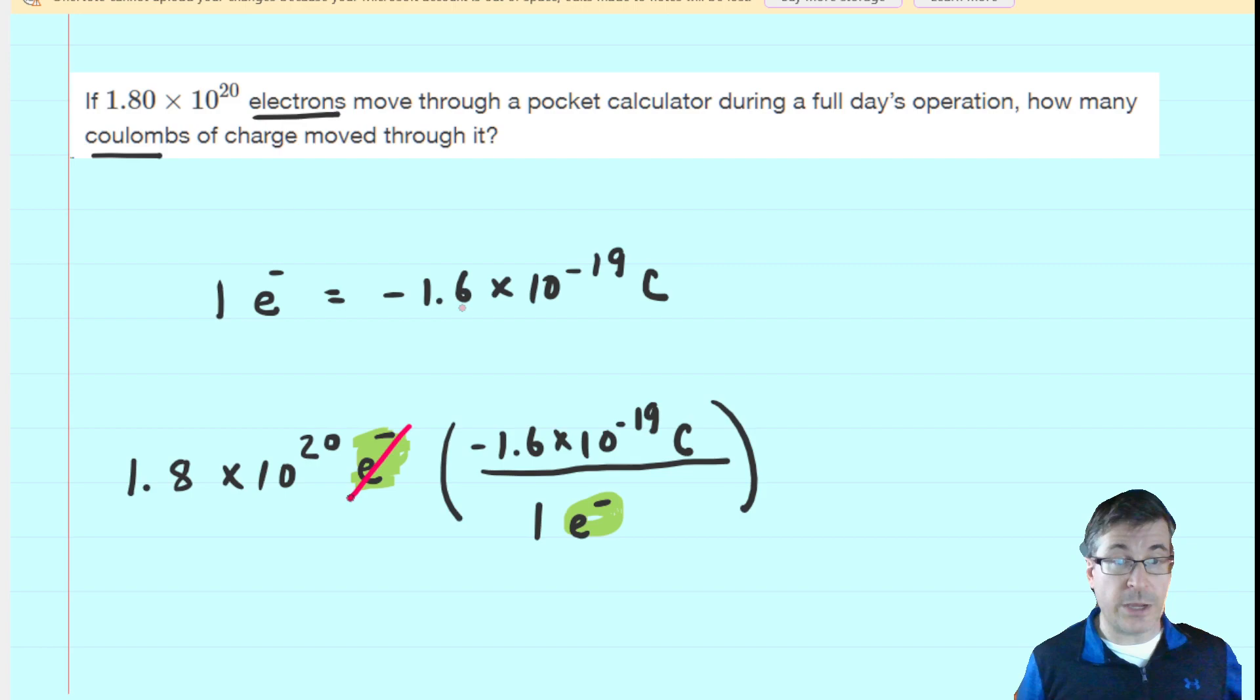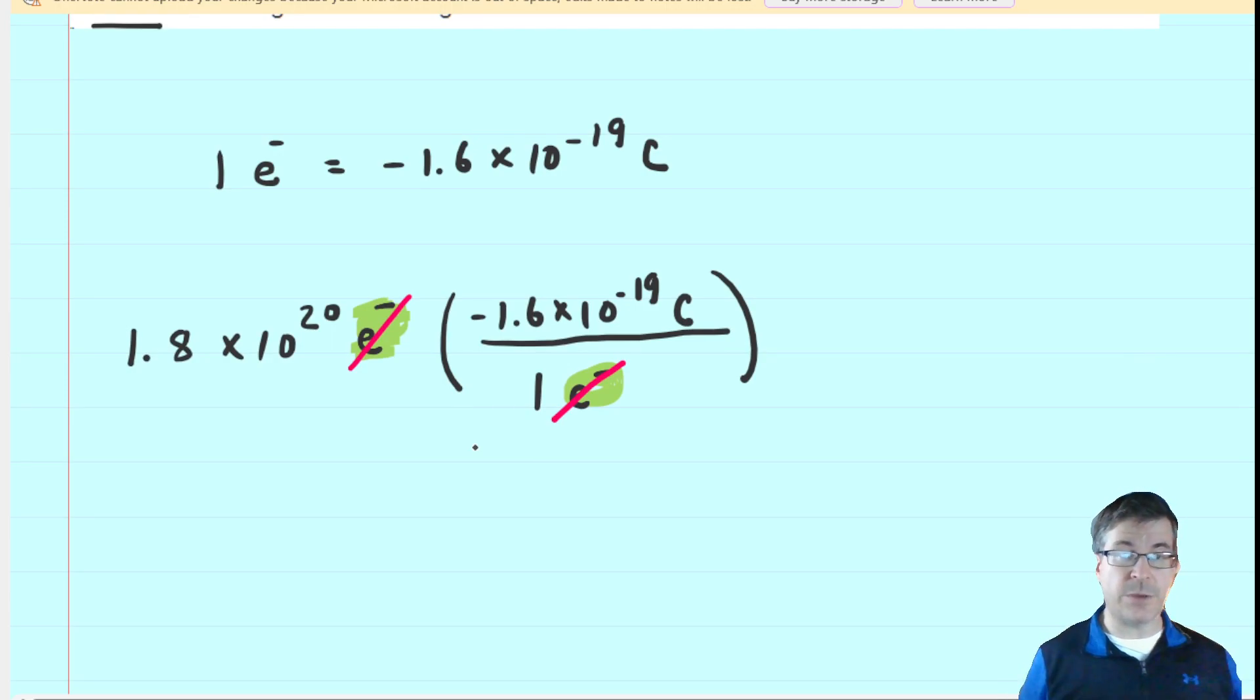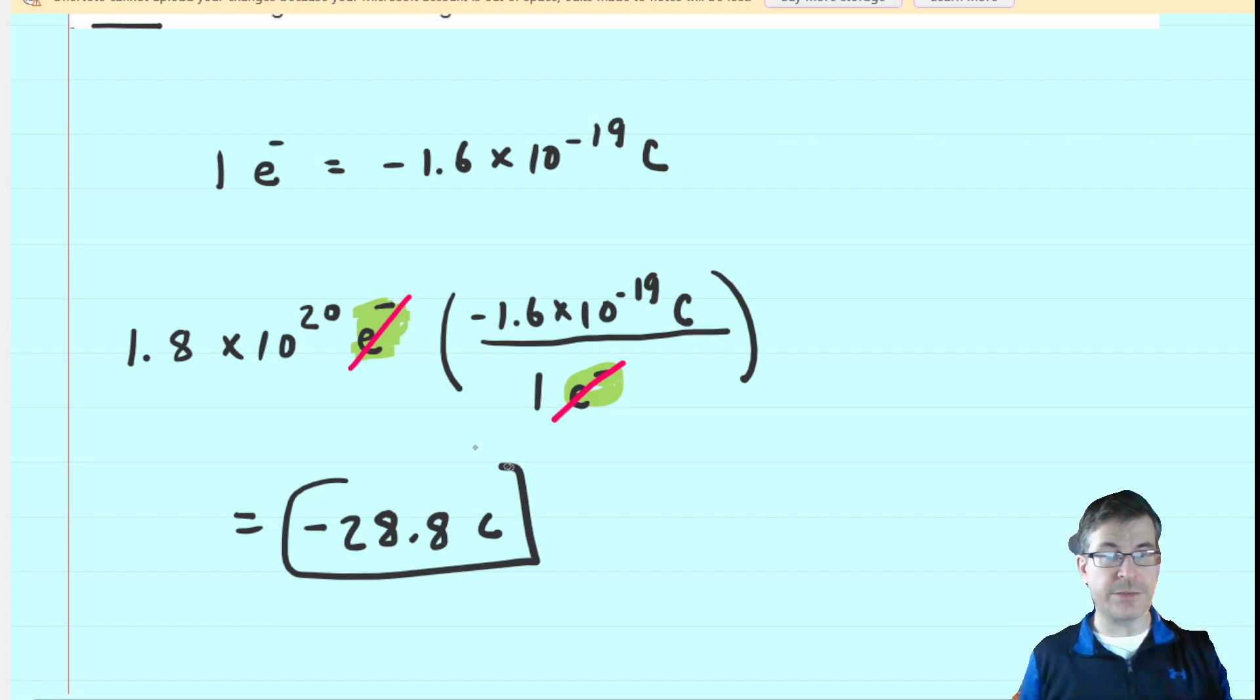That way they are diagonally situated. They divide out and cancel, which gives us our proper setup. Now you would just pick up your calculator and enter that in. When you do so, you should get negative 28.8 coulombs as the final unit of your answer. This is the correct answer to the question.